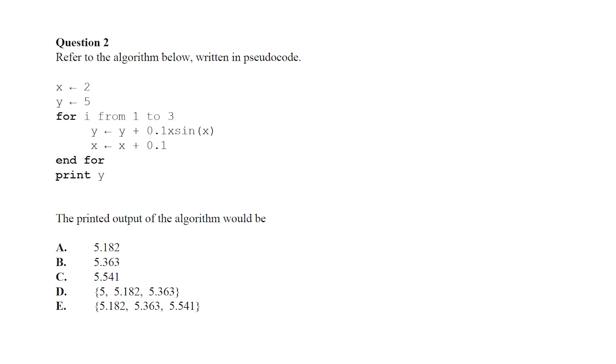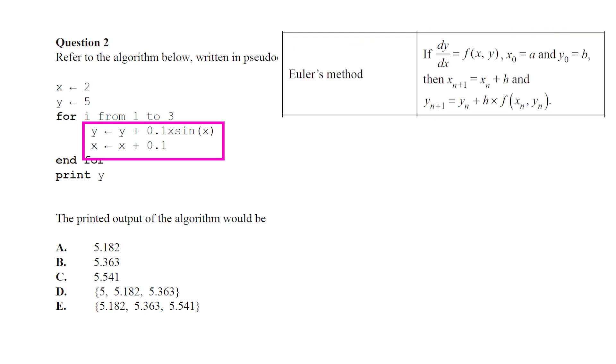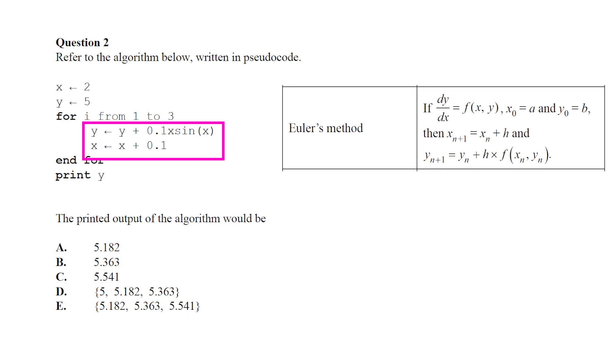We've got an algorithm below written in pseudocode, and what we want to do is identify the printed output of the algorithm. The arrow there is assigning a value to the variable. So x is starting as 2, y is going to be 5, and we're going to go through a for loop from i from 1 to 3. That means we're going to let i be 1, do something, let i be 2, do it again, let i be 3, do it finally for a third time. Then we're going to exit that for loop and print y. What are we actually doing inside that for loop? We are reassigning y to be whatever y was plus 0.1 x sin x. What this actually is, is Euler's method being applied with a certain differential equation. Then once we've done that, we're going to update x with x plus 0.1. In Euler's method here, the step size would be 0.1.